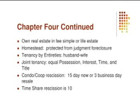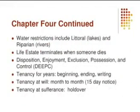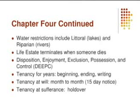A tenancy by the entirety is between husband and wife. A joint tenant is equal possession, interest, time, and title — the acronym is PITT, P-I-T-T. Condos and co-op rescission periods: 15 days for new units and three business days for a resale. The rescission period for a timeshare is 10 days. Water restrictions include littoral and riparian rights. The life estate terminates when someone dies. The acronym for our bundle of rights is DEEP-C, D-E-E-P-C: Disposition, Enjoyment, Exclusion, Possession, and Control.